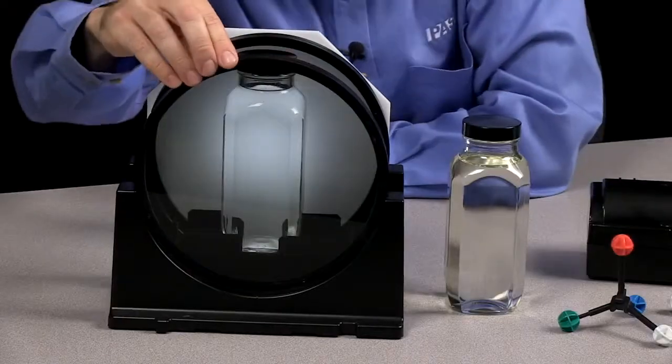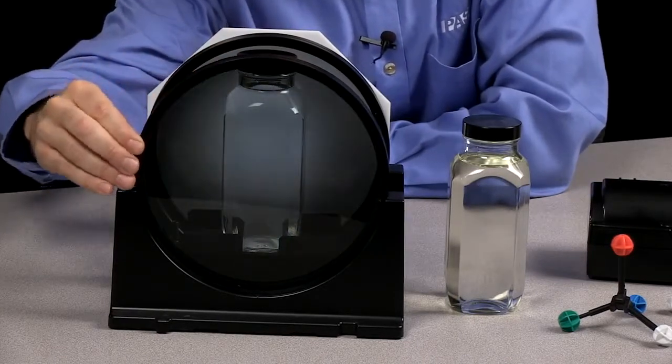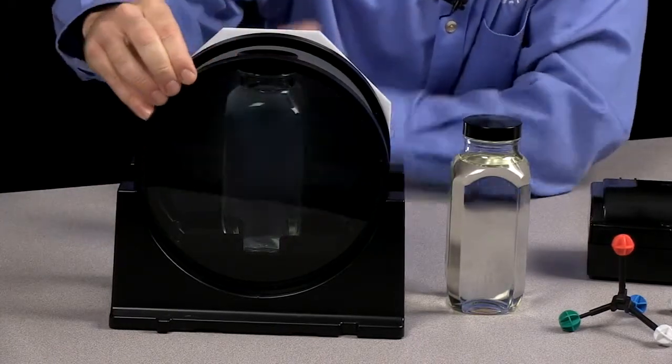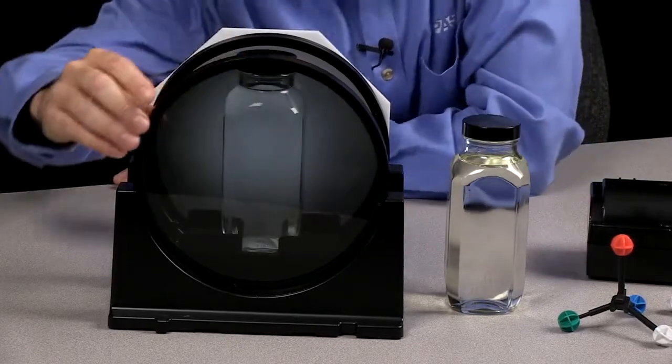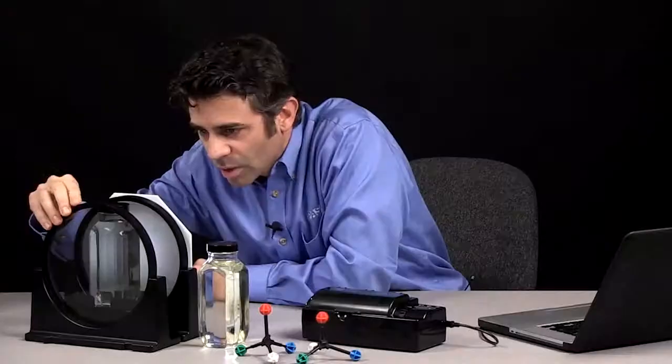And you notice when I turn the first polarizing film, that the sample and the film around it get darker. The water is not having any effect on the brightness of the light.